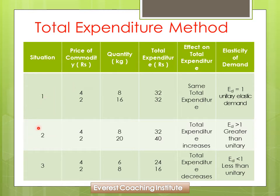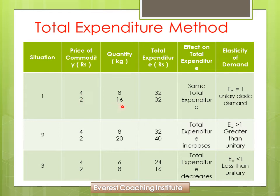Maine aapko ek illustration se samjhaya hai. Teen situations ke hisaab se table banaya hai. Price of commodity pehle 4 thi, quantity 8 kilo lete the — total expenditure tha 4 × 8 = 32. Jab price 4 se 2 ho gaya, humne quantity 8 se 16 kilo kar di. Ab total expenditure: 2 × 16 = 32 — pehle bhi 32, ab bhi 32. Total expenditure remains same — yeh aapka pehla case hai: ED is equal to 1, Unitary Elastic Demand.